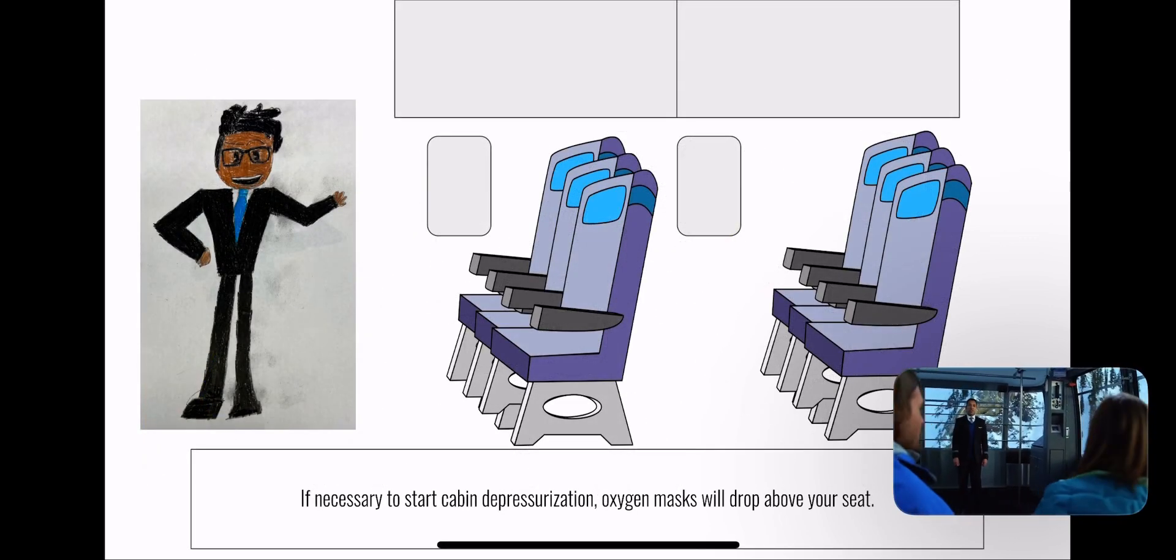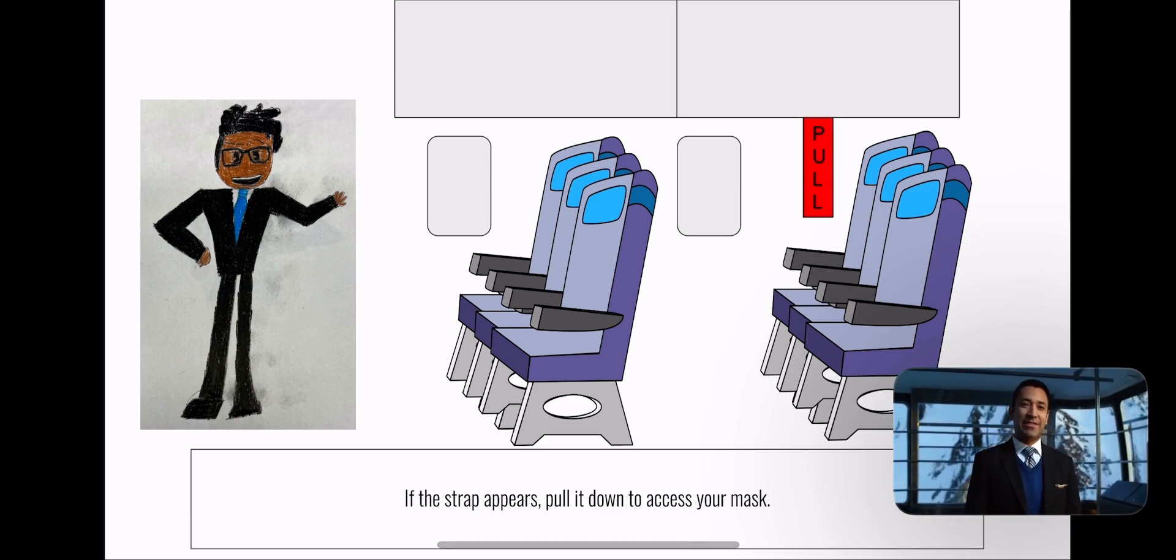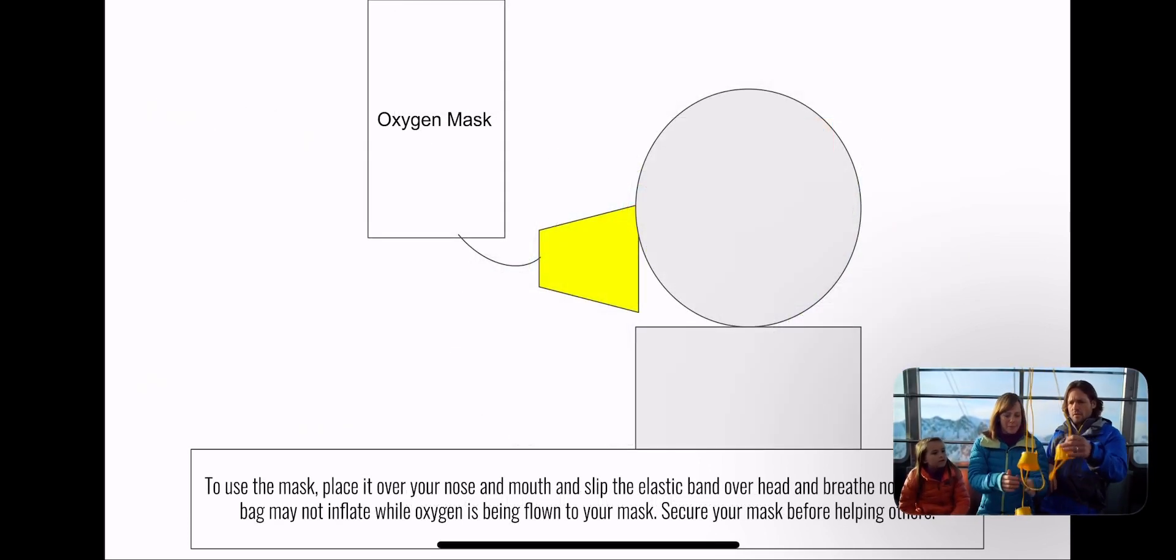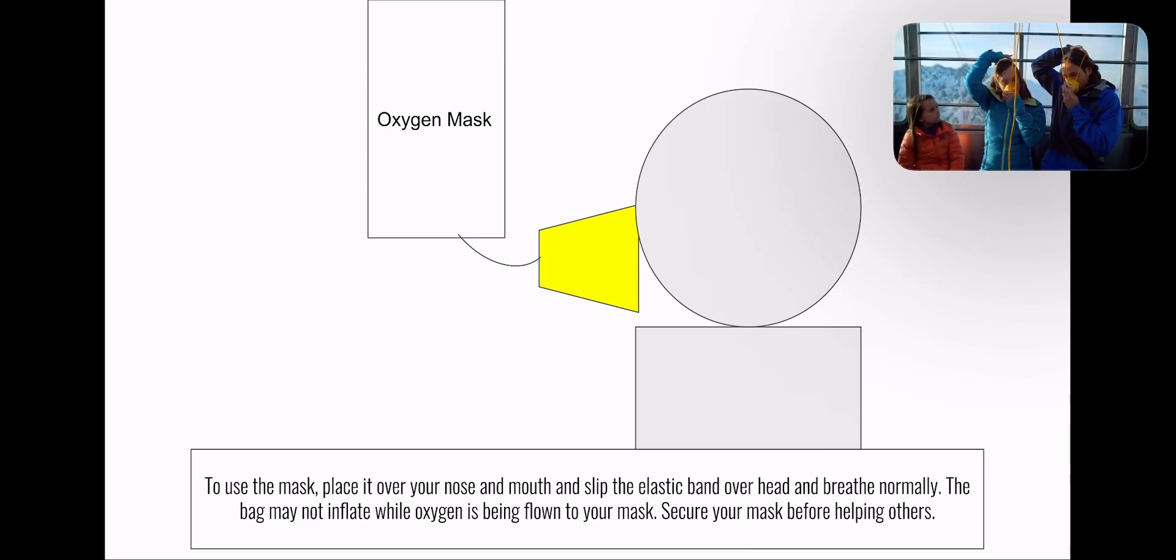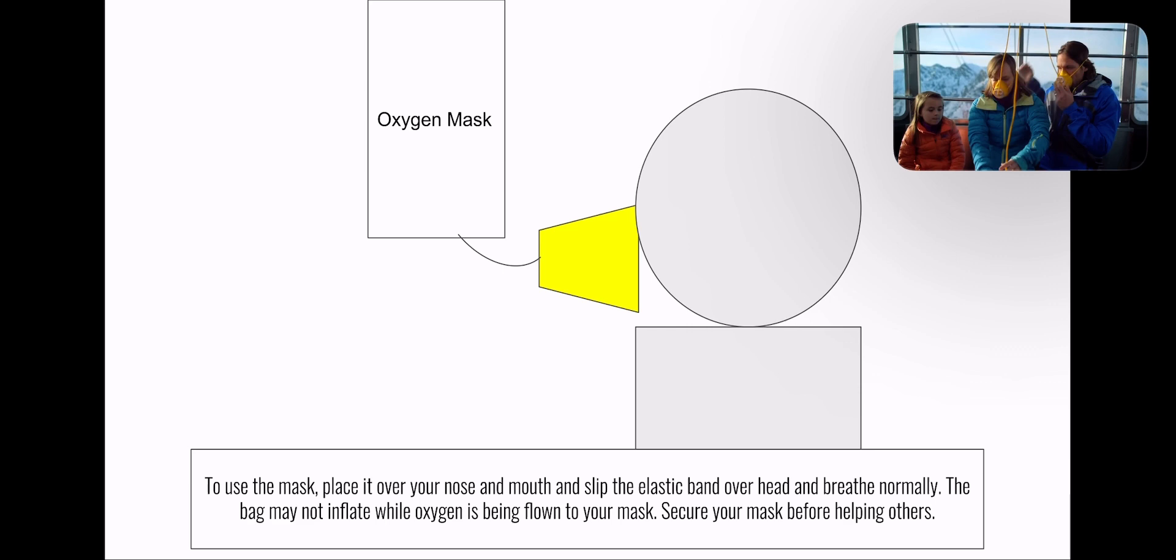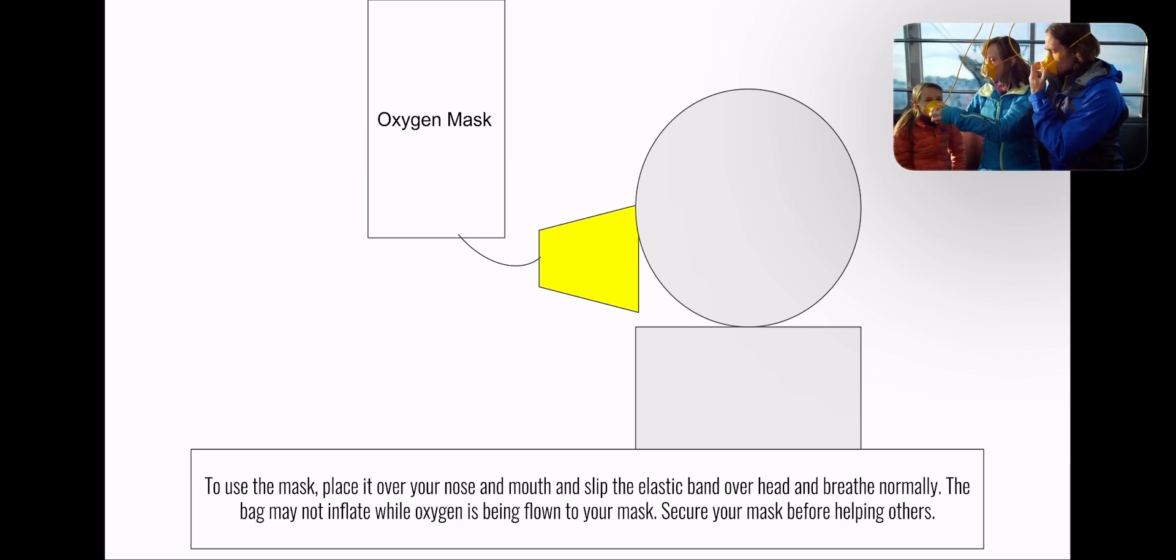If necessary, an oxygen mask will drop from above your seat. If a strap appears, pull down on the strap to access your mask. Firmly pull the mask to extend the tubing. Place the mask over your nose and mouth and slip the band over your head. The band does not require adjustment. To start the flow of oxygen, breathe normally. Make sure your mask is secure before helping others.